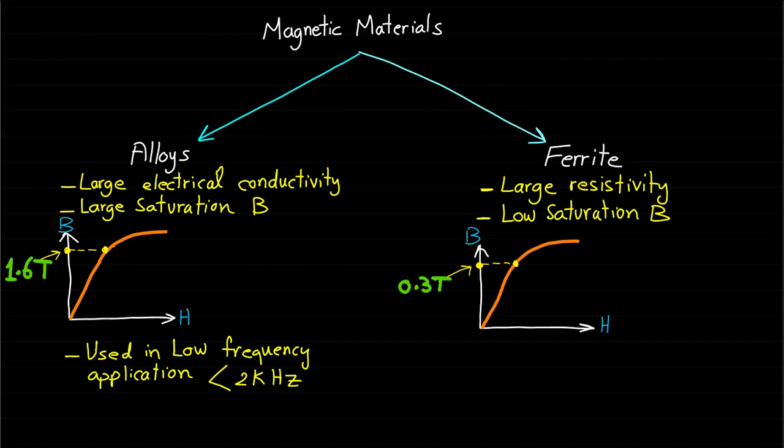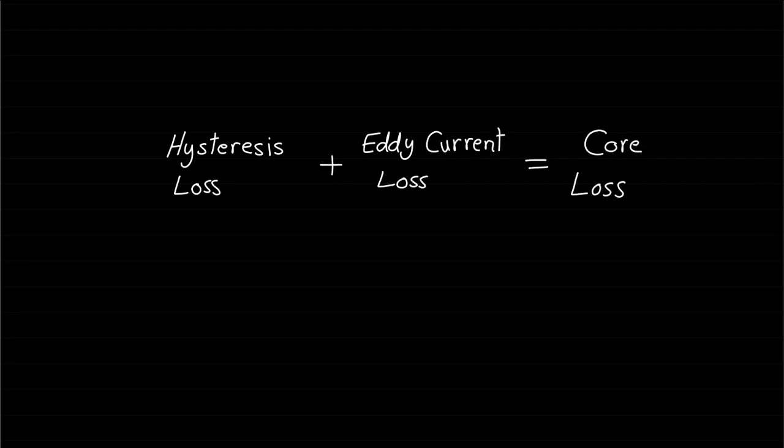Ferrites are materials of choice for cores that operate at high frequencies greater than 10 kHz because of the low eddy current loss. It should be noted here that the sum of the hysteresis and eddy current loss is called the core loss of the magnetic circuit. Since this power loss is dissipated as heat, the core loss can be modeled as a resistance R_C in the equivalent electrical circuit.